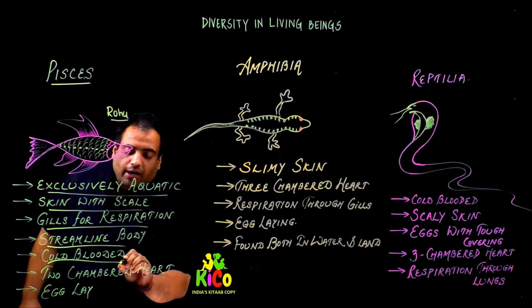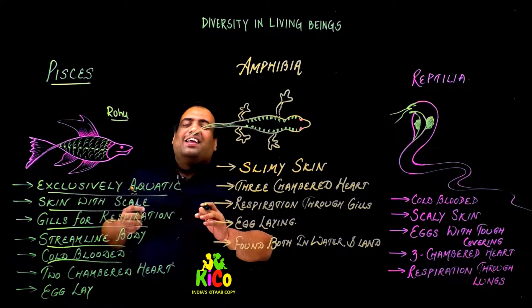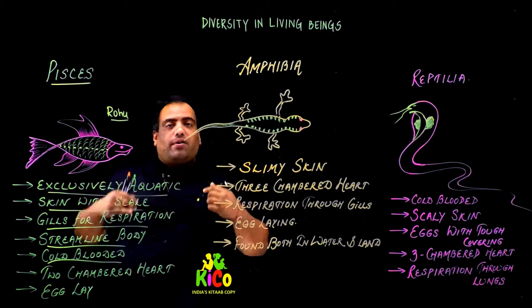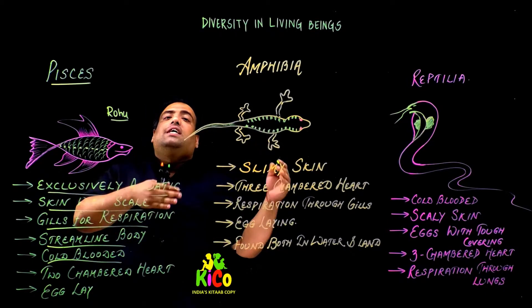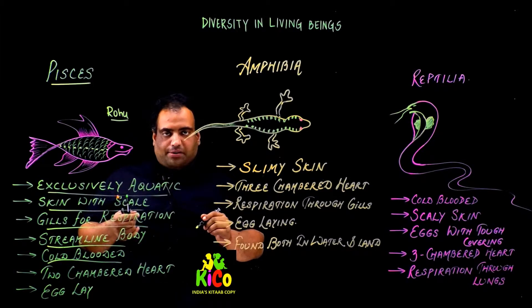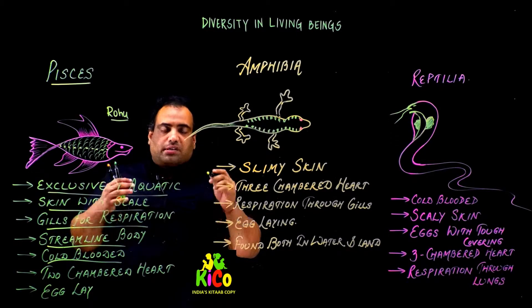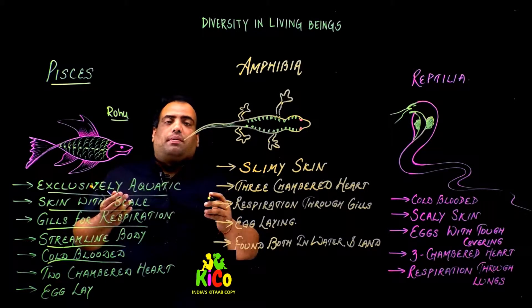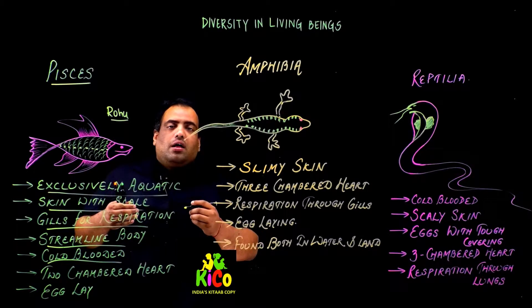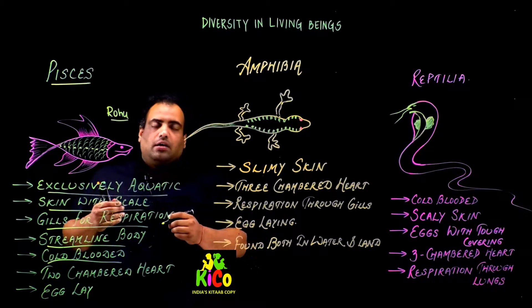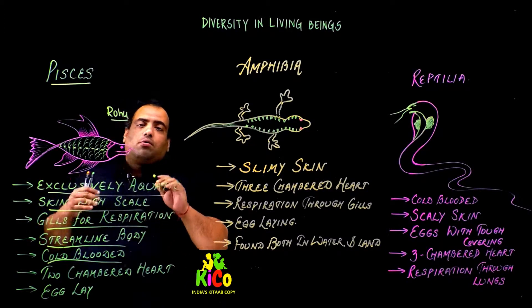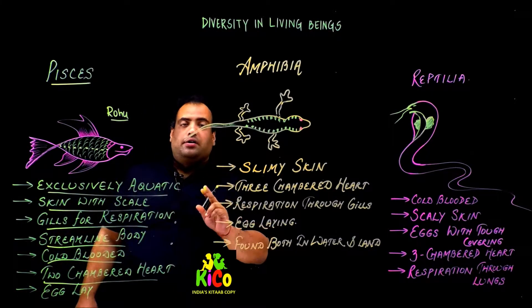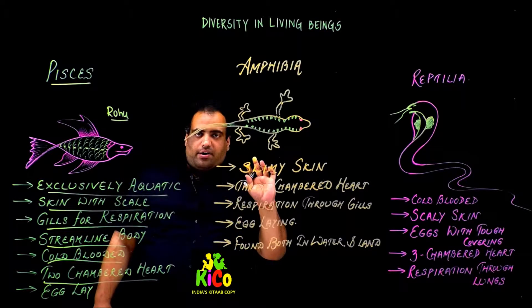Fishes cannot change their body temperature in accordance with changes in the temperature of the environment or climate — they are cold-blooded organisms. Their heart is two-chambered, with one atrium and one ventricle.